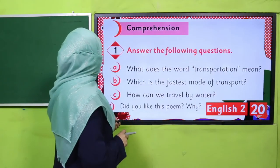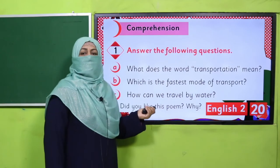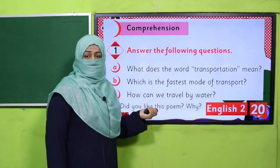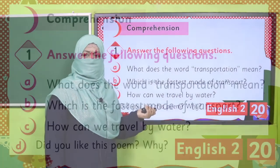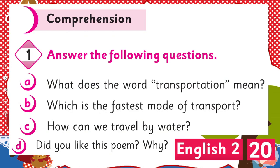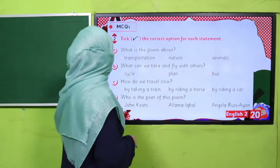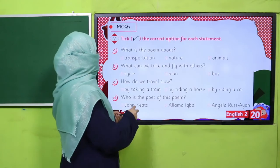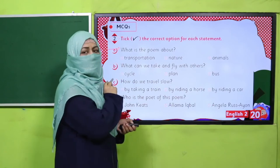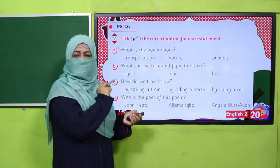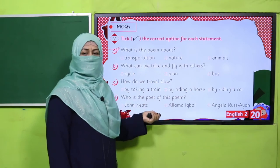This is all about transportation — the ways and means the poetess has mentioned in this poem. Let's do the comprehension. Teachers, kindly pause the video, take answers from students, and then ask them to write in the notebook. Here is a tick-and-cross exercise — read the statement and choose the correct answer. Pause the video and complete this exercise in your book.